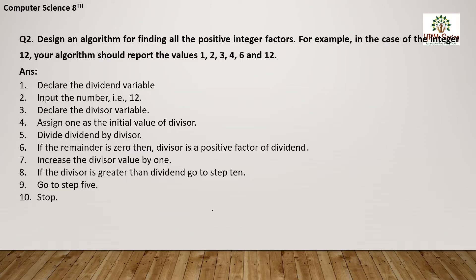Divide the dividend by the divisors. If we divide 12 by 1, and the remainder is 0, then the divisor is a positive factor. So we display 1 as the divisor. Then we increase the divisors value by 1 — so now the divisors value becomes 2.